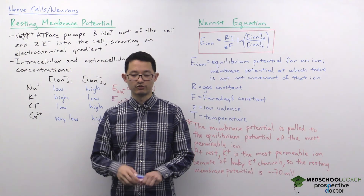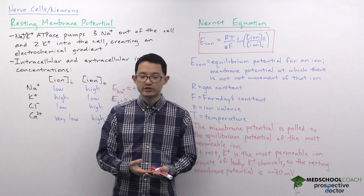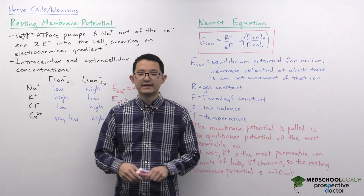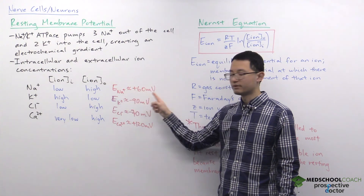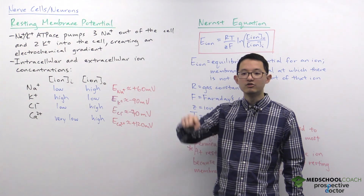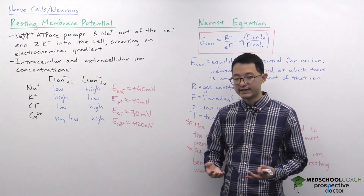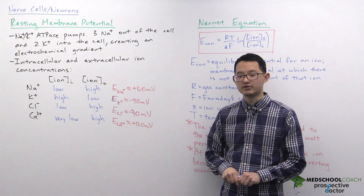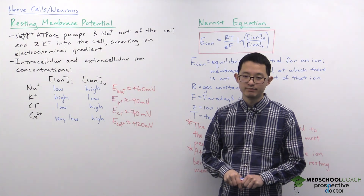During an action potential, once threshold is reached, voltage-gated sodium channels open, making sodium the most permeable ion. This pulls the membrane potential toward sodium's equilibrium potential of positive 60 millivolts — which is why we see depolarization during an action potential. In summary, the membrane potential of a cell is determined by the equilibrium potential of the most permeable ion, and at rest that ion is potassium, due to leaky potassium channels.